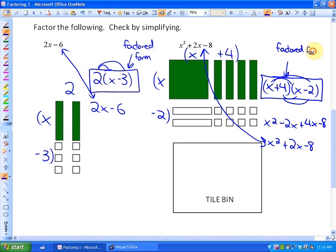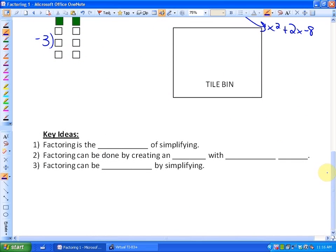So as you can see from this lesson, factoring is the opposite of simplifying. Factoring can be done by creating an area with algebra tiles. And finally, factoring can be checked by simplifying.